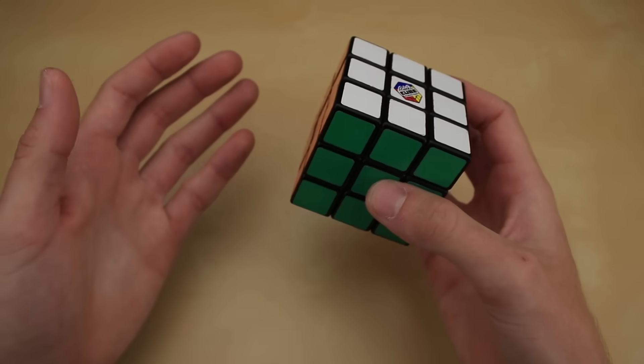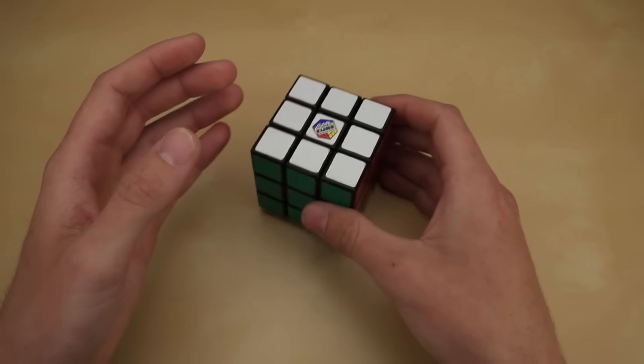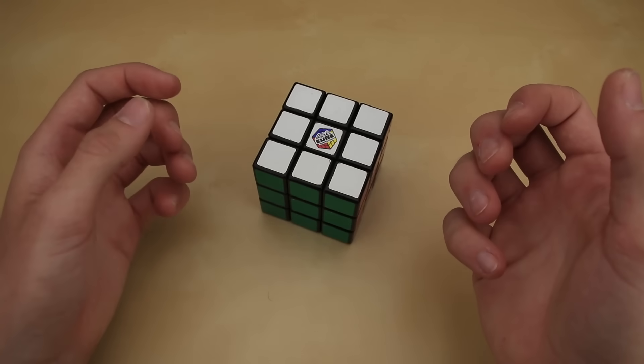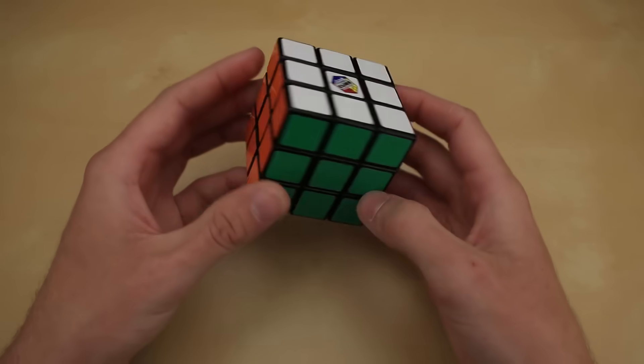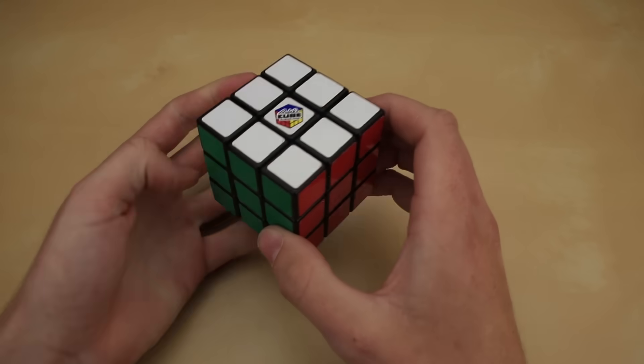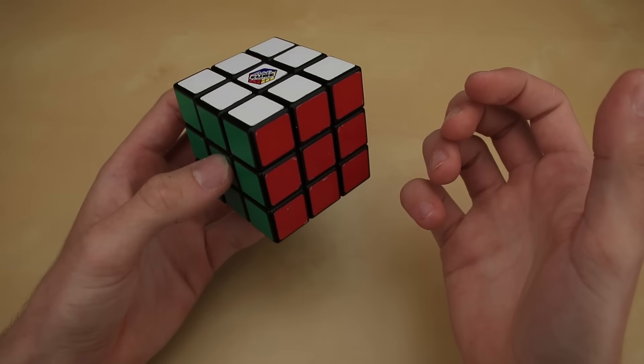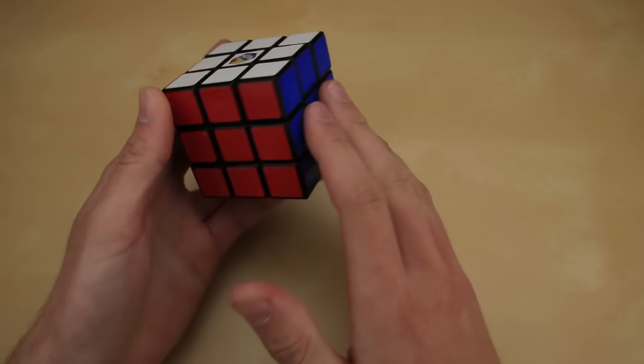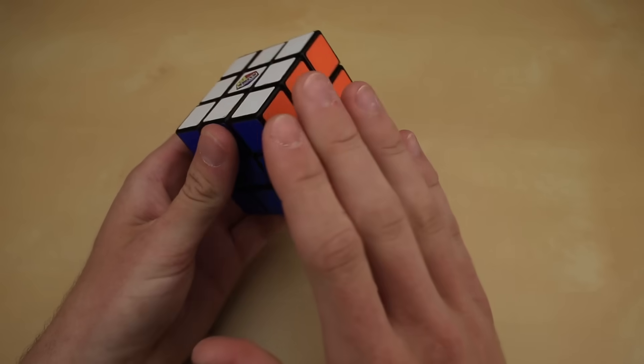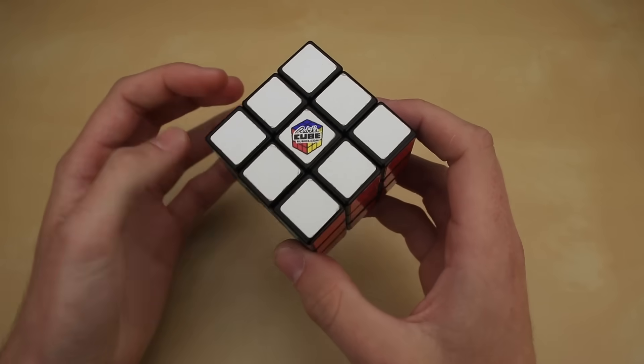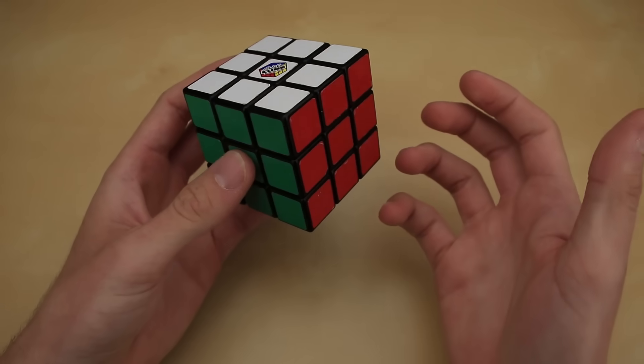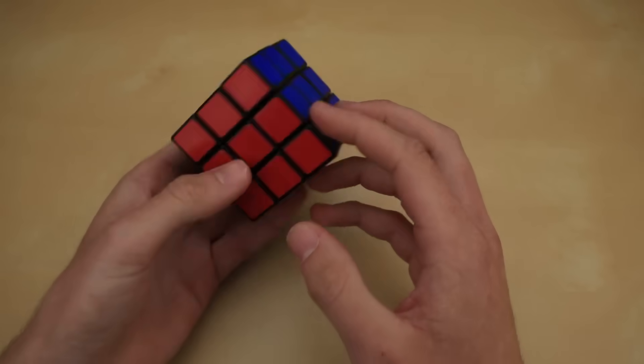Of course the bigger that you make a cube, the heavier it's going to be, so if you're Tony Fisher and you make a cube that's literally taller than I am, then of course it's going to weigh more than you could possibly make a standard size cube weigh. And finally, just like my lightest cube video, I'm adding the special requirement that at least the outside of the puzzle has to be made out of the standard plastic of a Rubik's Cube, because of course you could just make a cube out of solid metal and it would of course be heavier than what I'm going to make.